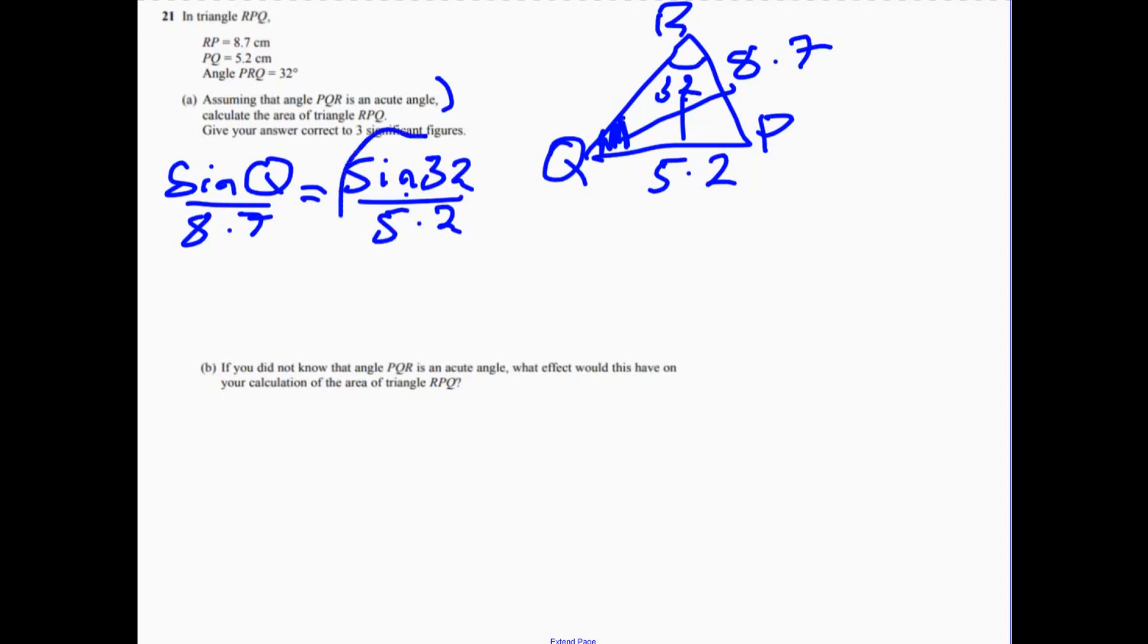So if we work this out, multiply it by the 8.7, and then we're going to inverse sine that. So we should find out that angle Q from there is equal to 62.4 degrees.